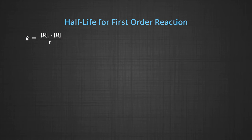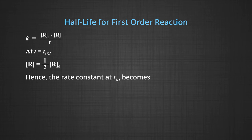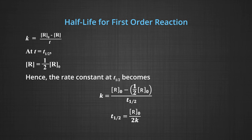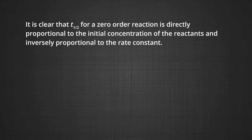For a zero order reaction, the rate constant is K = (R₀ − R)/T. At T = T½, R = R₀/2. Therefore K = (R₀ − R₀/2)/T½, giving T½ = R₀/(2K). It is clear that T½ for a zero order reaction is directly proportional to the initial concentration of the reactants and inversely proportional to the rate constant.